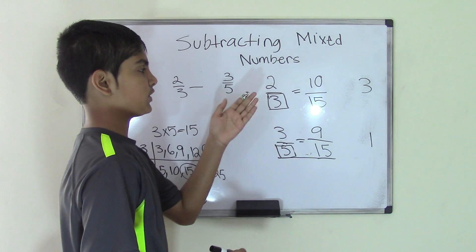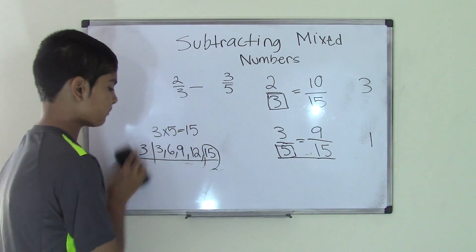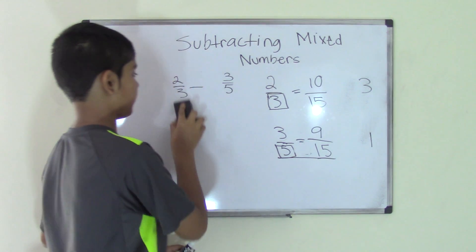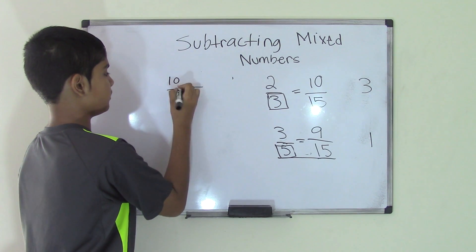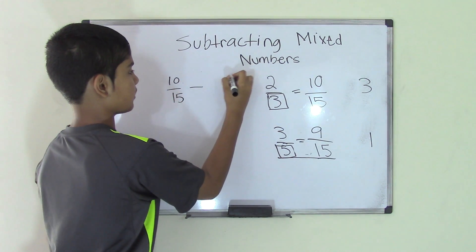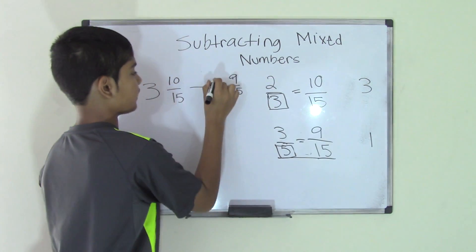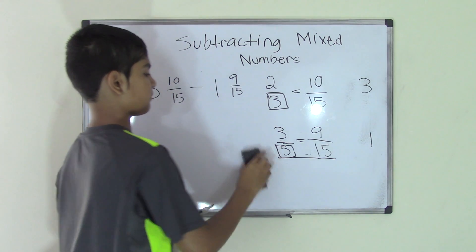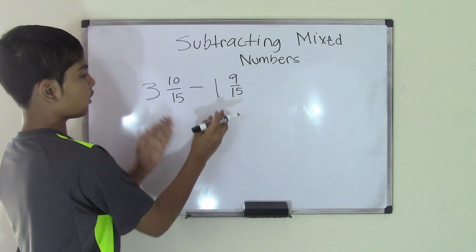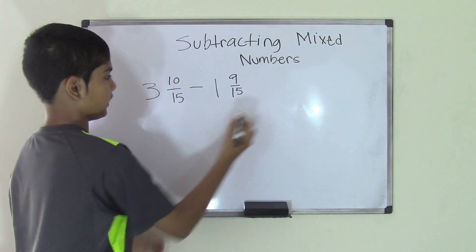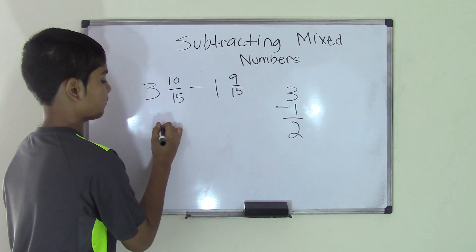Now we have our two fractions: 10/15 and 9/15. We can bring back our whole numbers — 3 and 1 — and write the new fractions down. Now all we have to do is subtract. So first let's do the whole numbers: 3 minus 1 is 2. So we bring the 2 down.